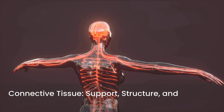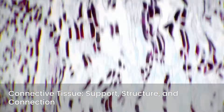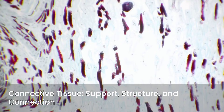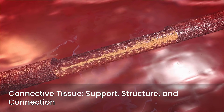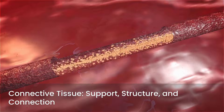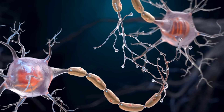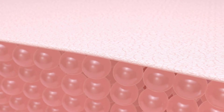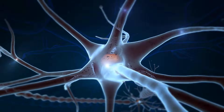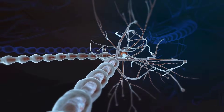Connective tissue provides support, structure, and connects other tissues and organs. It's the most diverse tissue type, ranging from loose packing material to dense, rigid structures. A defining feature is its abundant extracellular matrix, or ECM. The ECM consists of protein fibers like collagen, which provides tensile strength, and elastin, which offers elasticity. Ground substance, a gel-like material, fills the spaces between cells and fibers.